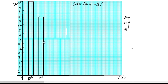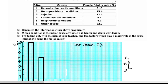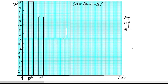Now we are going to add the third category: Injuries, which has a value of 12.4. I am selecting one unit on the graph for 12.4.